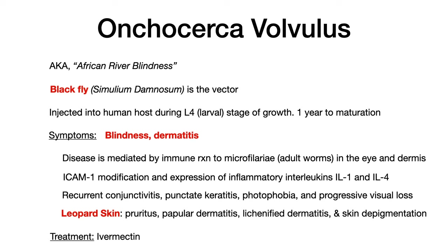Onchocerca volvulus is known as African river blindness because the black fly, Simulium damnosum, is the vector. That fly tends to live around oxygen-rich, fast-flowing bodies of water like rivers in Africa. Because there is a disproportionate number of black flies around high-flowing rivers in Africa, people who live around those rivers make up the pockets of high infectivity — you'd see clustering of infections along river areas on a map.